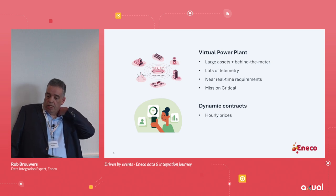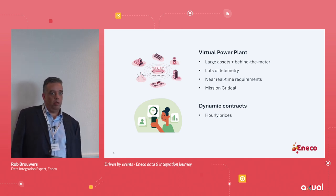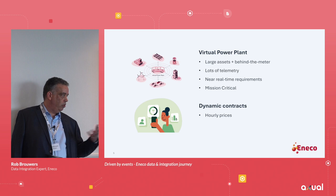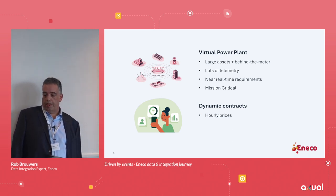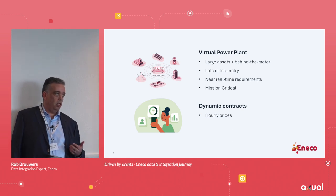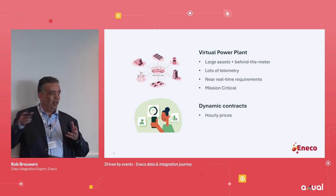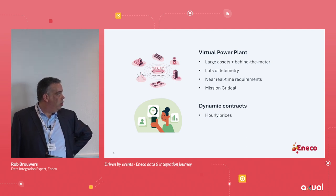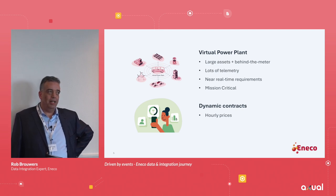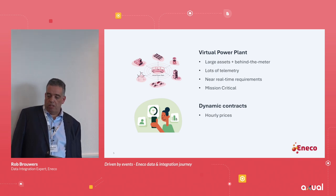What we do with the VPP is we steer and we get data from a lot of assets — it all goes into this one VPP system, and we use Kafka to feed that system with data and also to get data out of it. It's about large assets, but VPP is mostly about smaller assets: wind parks have many turbines, and we also have batteries, e-boilers — all those kinds of things are part of that ecosystem. This means lots of telemetry fed into the VPP.